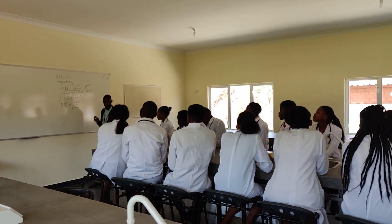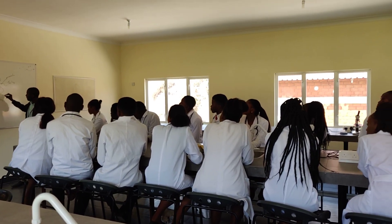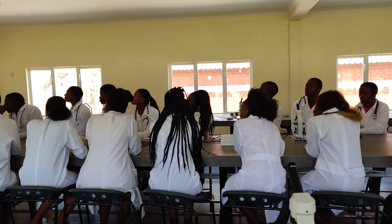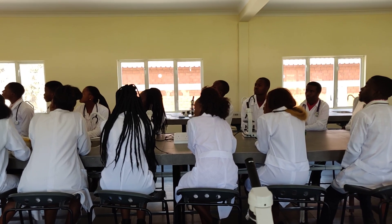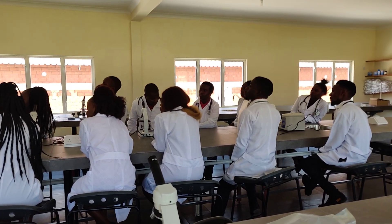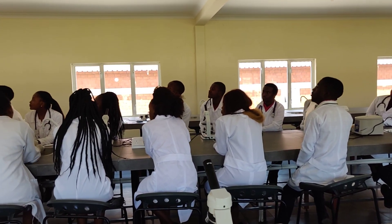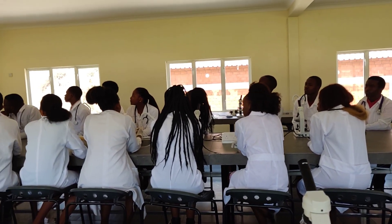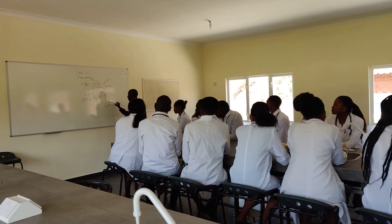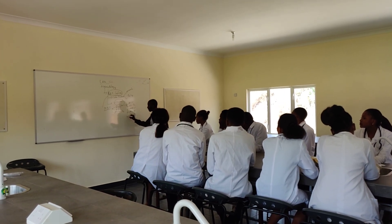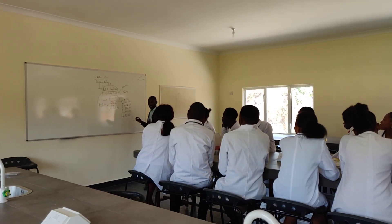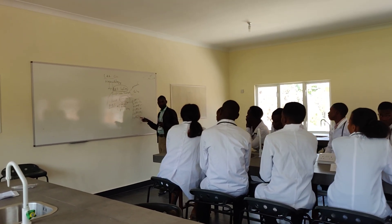Now we are looking at the red blood cell indices, meaning we are interested, first of all, to look at the red cell counts, and then the hemoglobin concentration. From there, we are going to look at the mean cell volume, and then we are looking at the mean cell hemoglobin concentration, and then we have the mean cell hemoglobin, or the mean corpuscular hemoglobin.